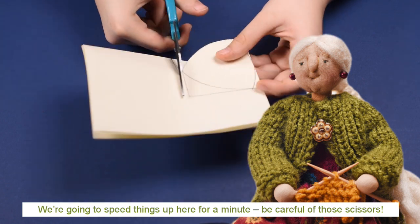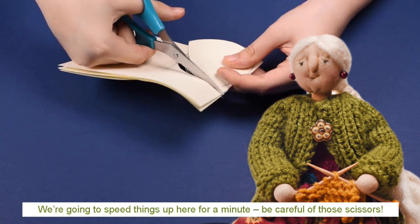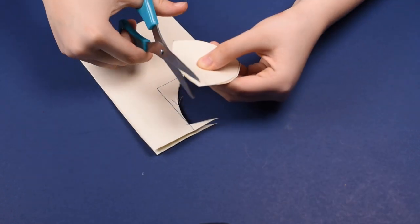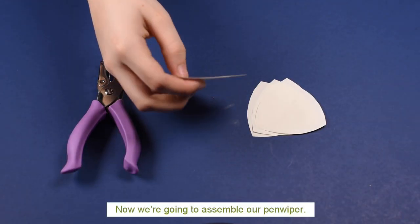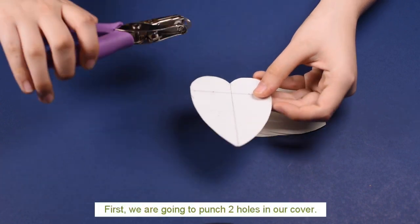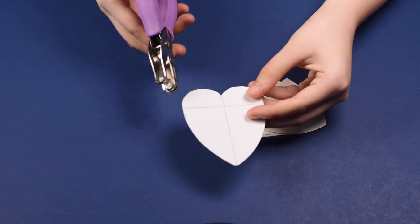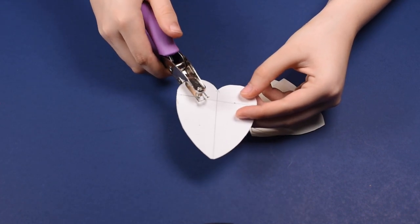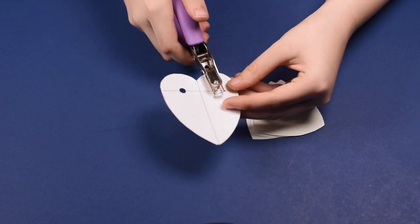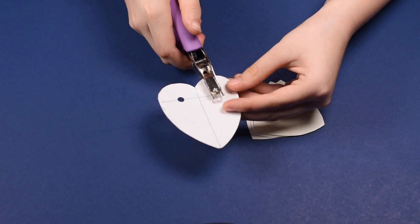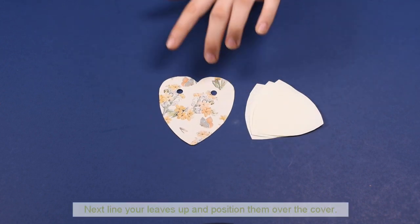Now let's cut out those leaves. We're going to speed things up here for a minute. Be careful of those scissors. And now we're going to assemble our pen wiper. First, we're going to punch holes in our cover. Remember those dots we placed earlier? We're going to punch our holes through those dots.